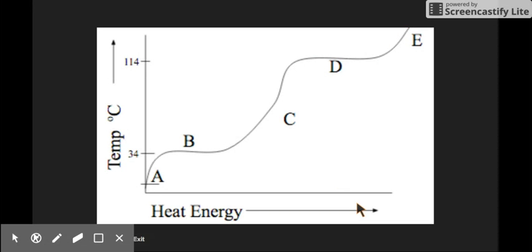Where is heat energy used to overcome the forces of attraction between particles? Here and here. Where is heat energy used to make particles move faster? Here, here, and here. And where do the particles have KE? Everywhere.